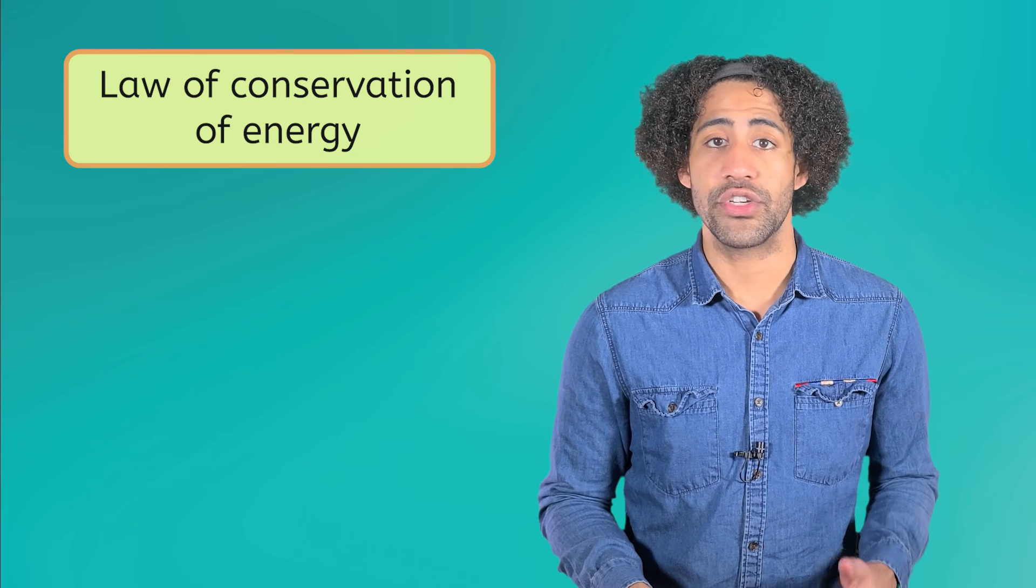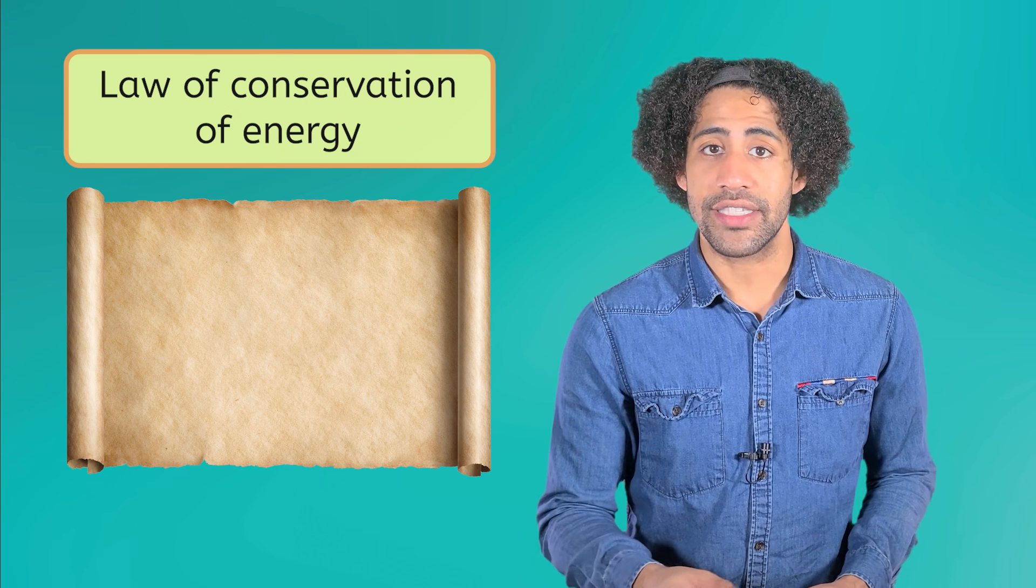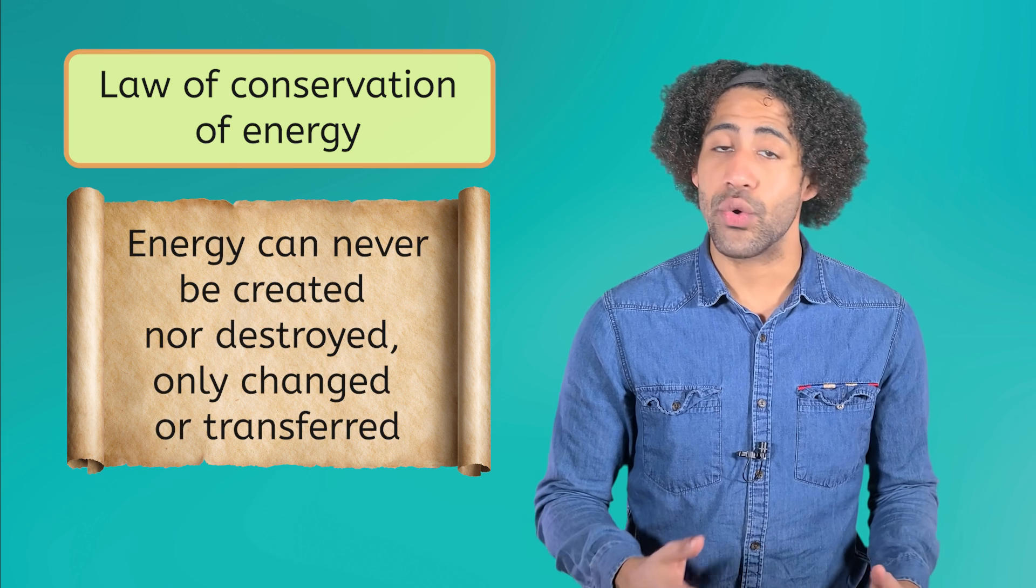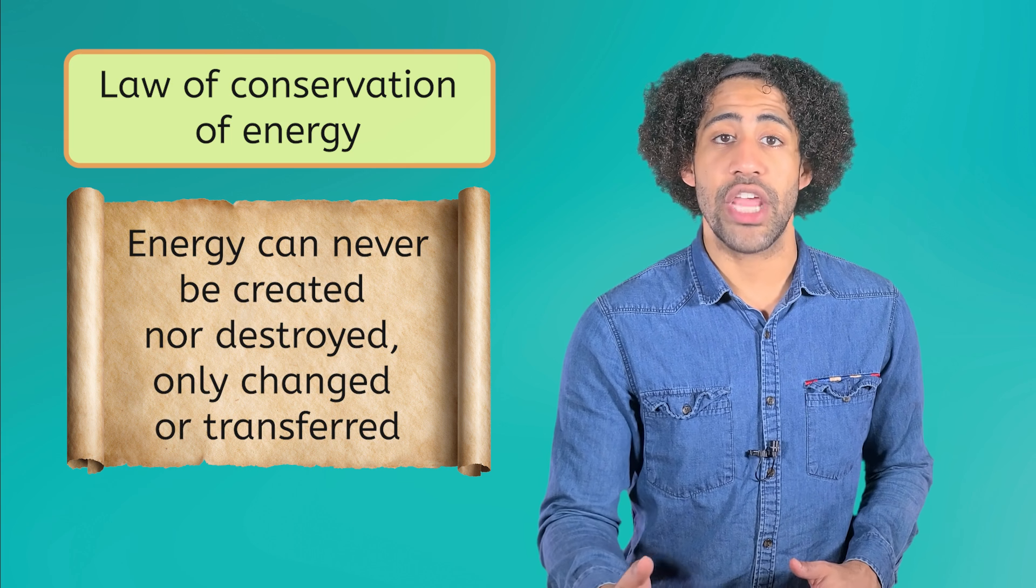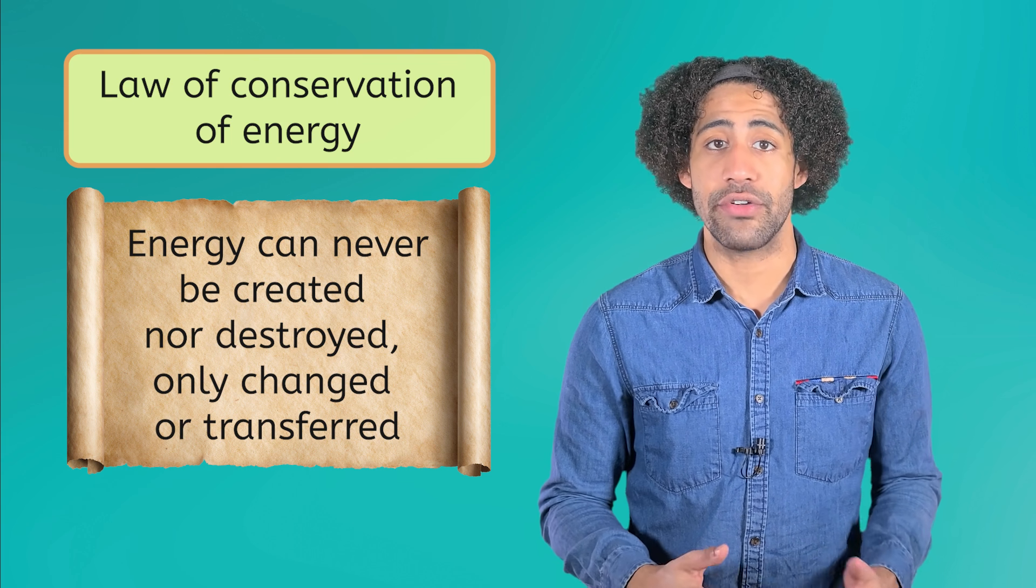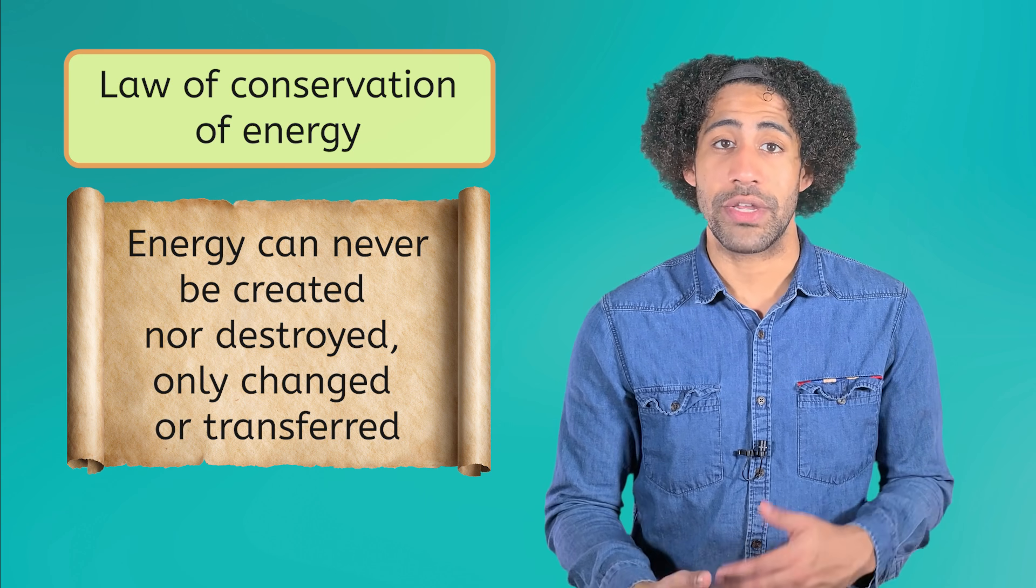But where is this heat coming from? There's an important rule called the law of conservation of energy. It tells us that energy can never be created or destroyed. It can only change between different types of energy or be transferred between matter. This means when the air outside gets hotter, it isn't making the energy, it's getting the energy from somewhere else. That's where heat transfer comes in.